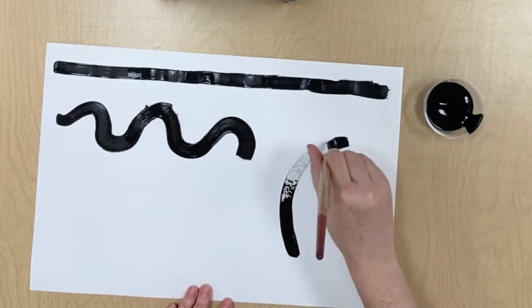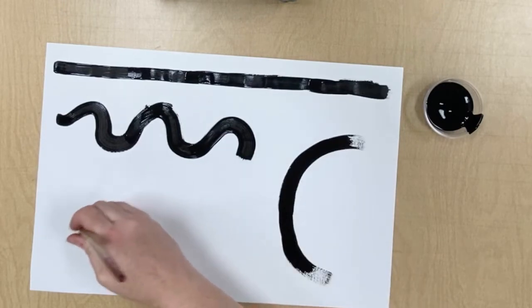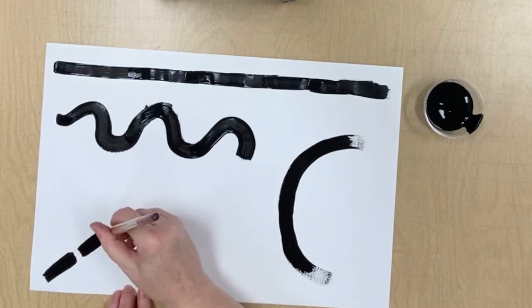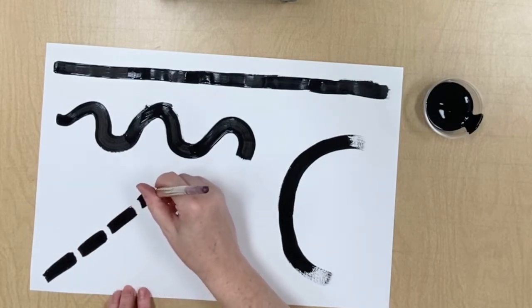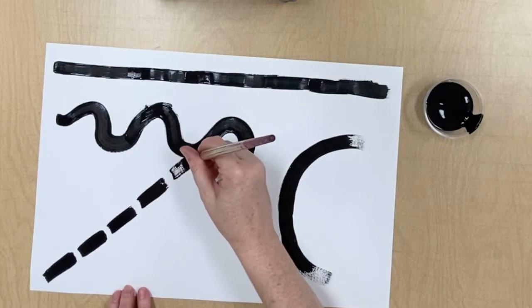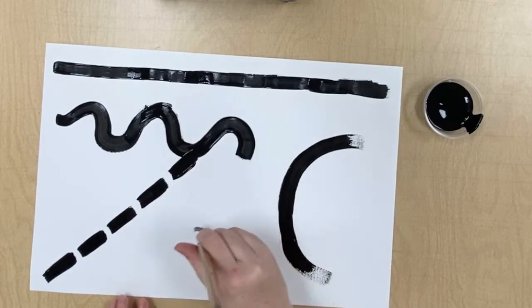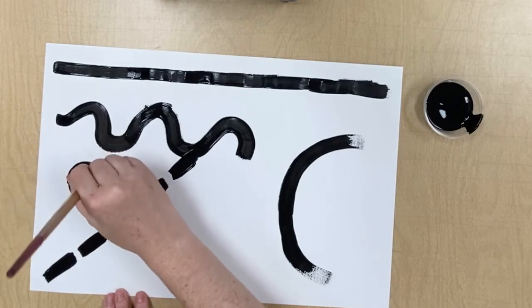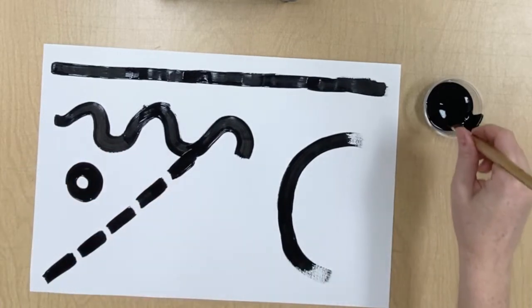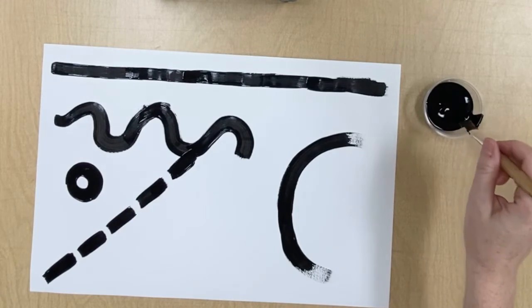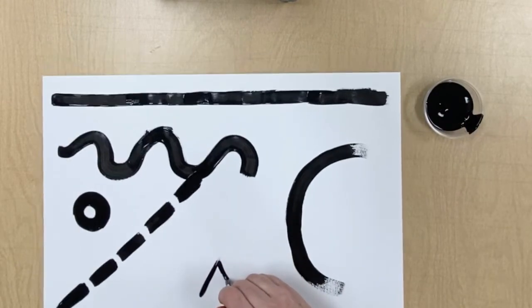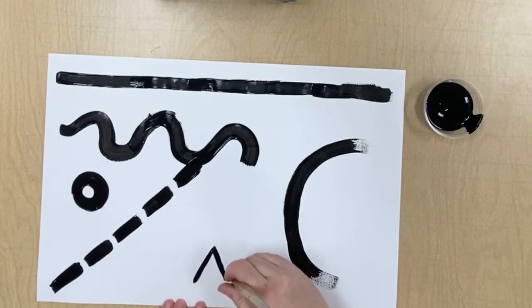So you're going to think about all the different lines that you know and start filling up the white paper with different lines. What's this line called? Yeah, a dashed line. You could even paint shapes. Here I'm using the side of the brush so it makes a thinner line.